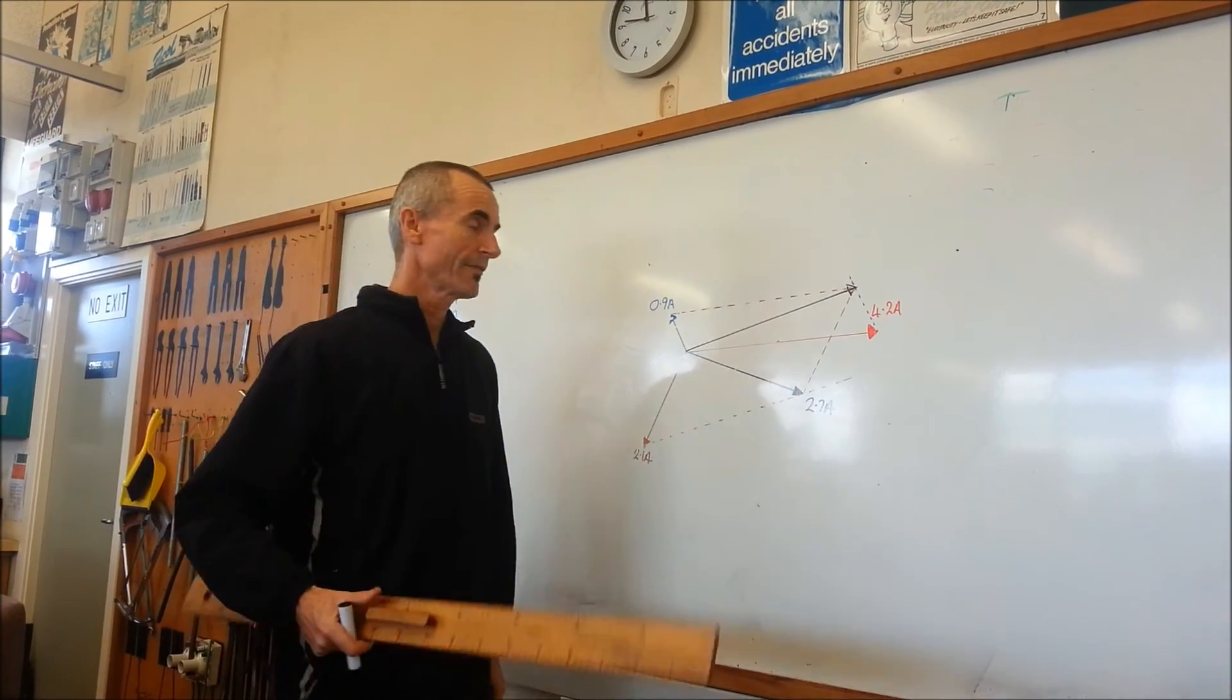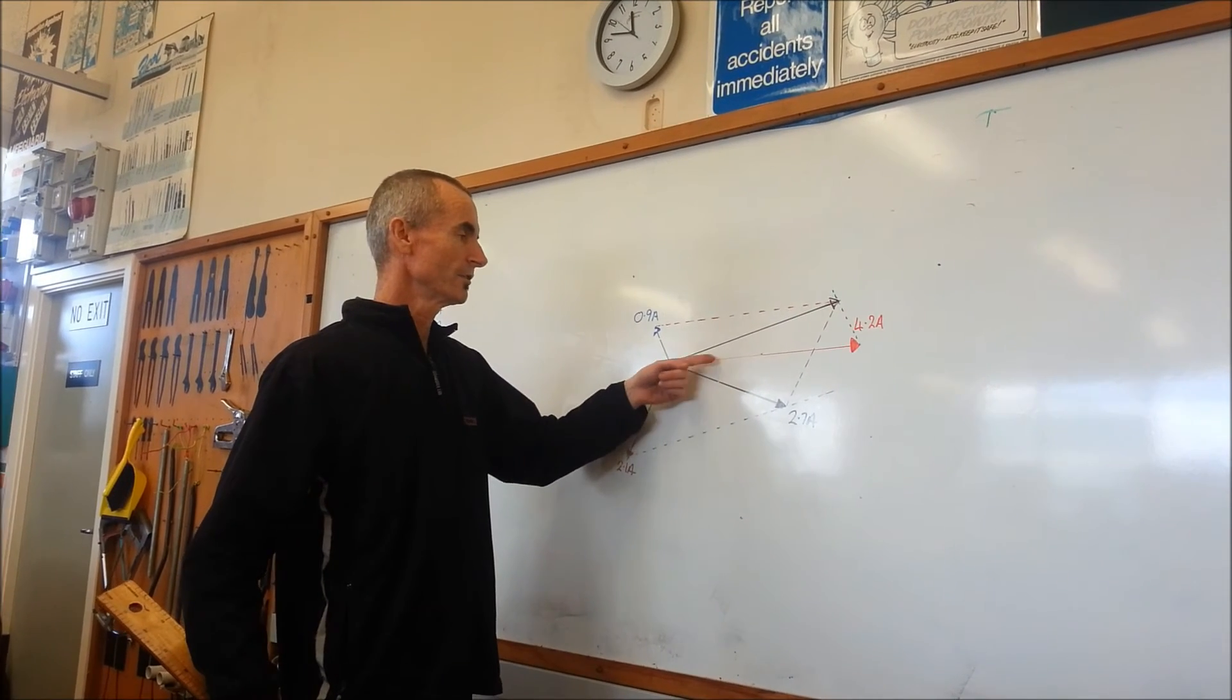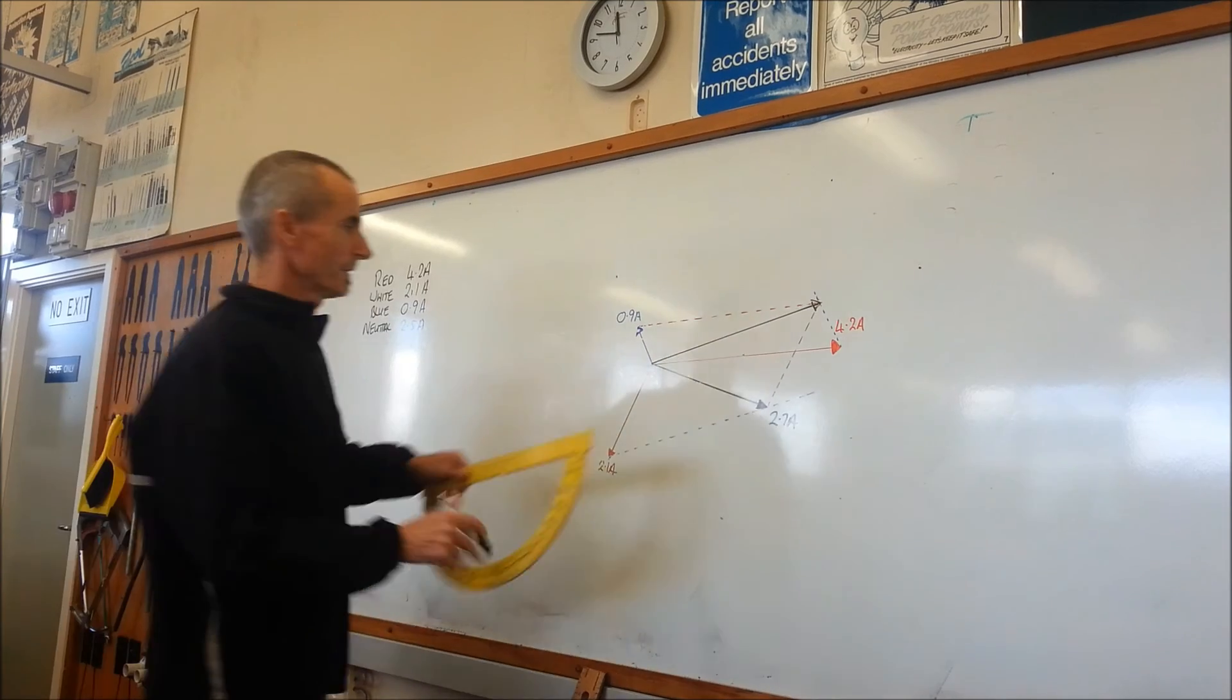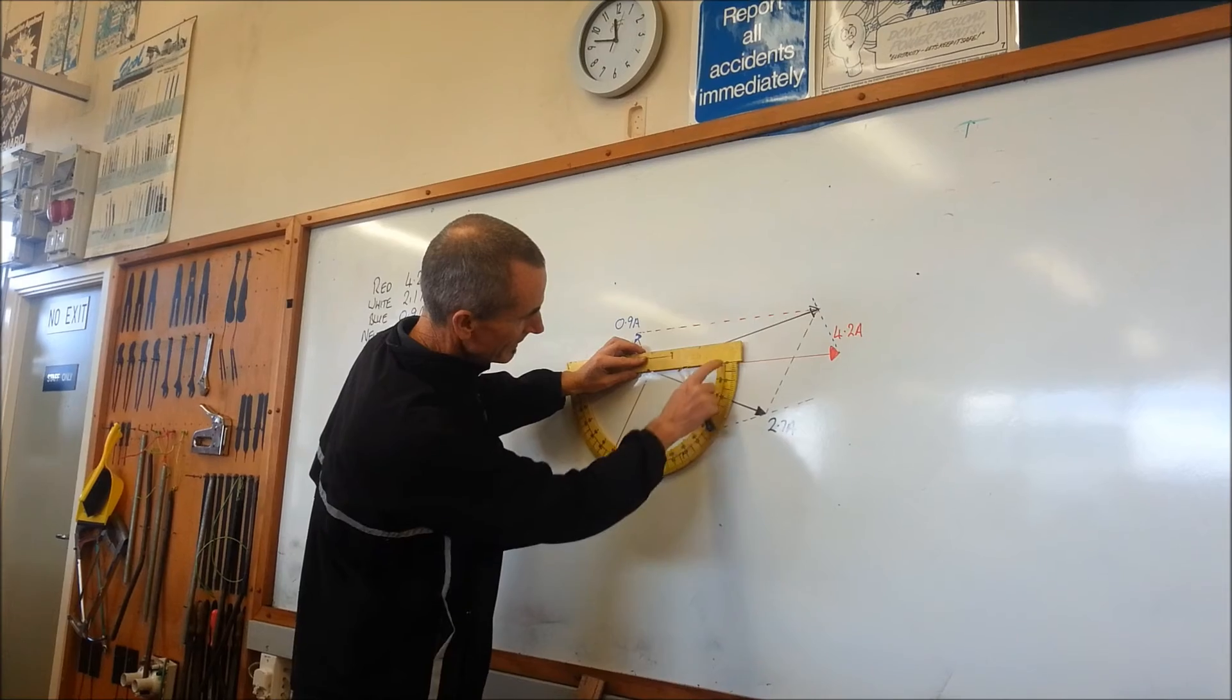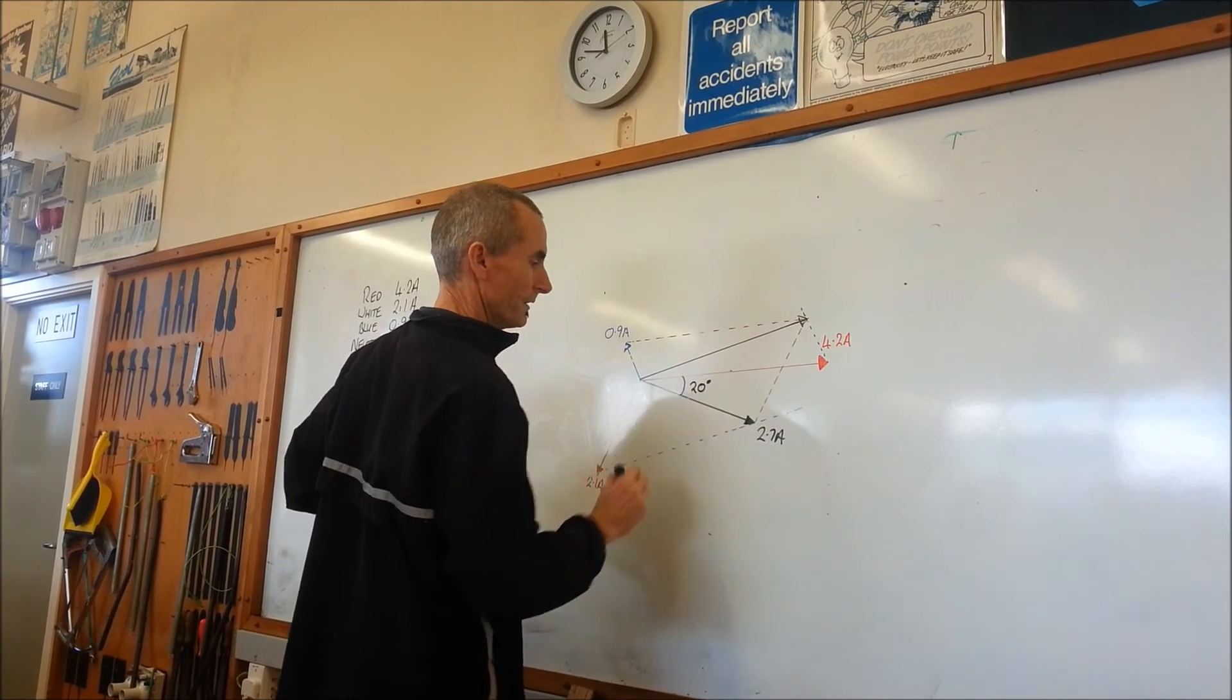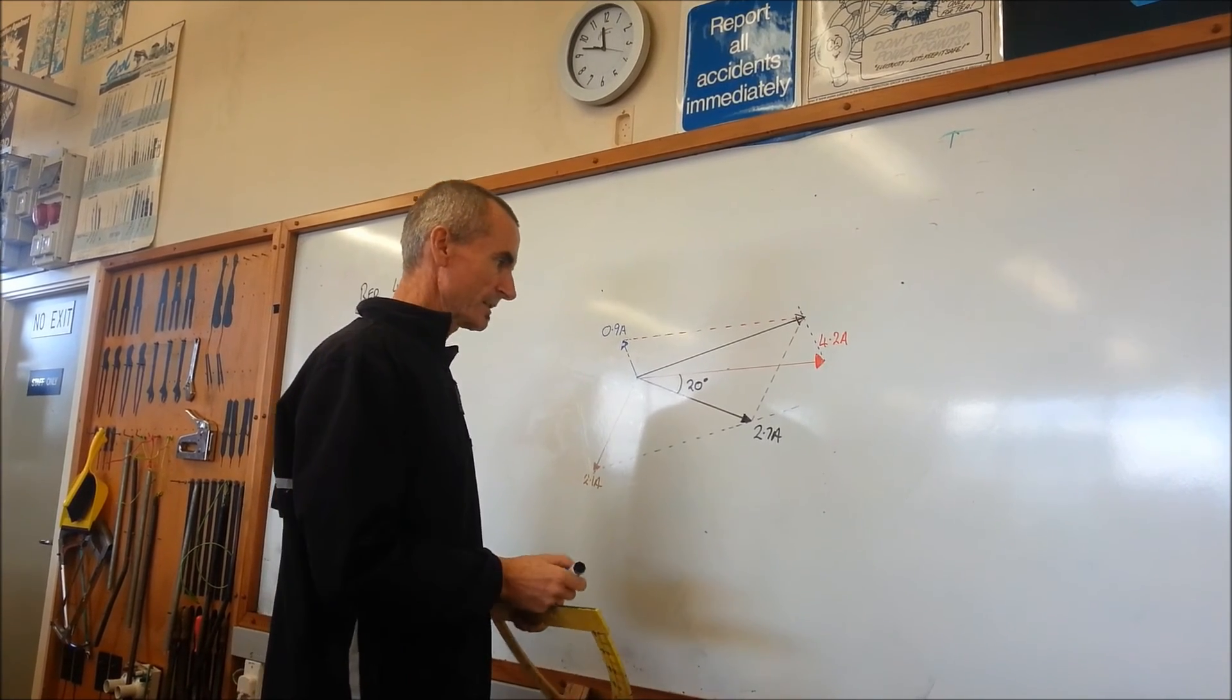Now we're left with the final part of this, to measure the deviation from any of the phases. The nearest phase we've got here, the neutral, the nearest phase is the red, so we can measure how far out that is. So from the red voltage it's 20 degrees. So from there you could say the neutral current is lagging the red voltage by 20 degrees and 2.7 amps.